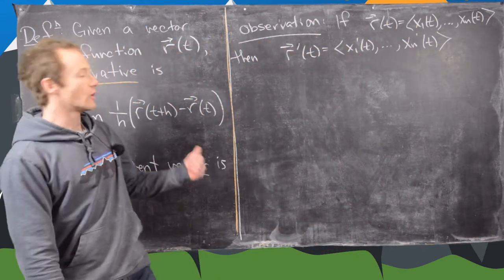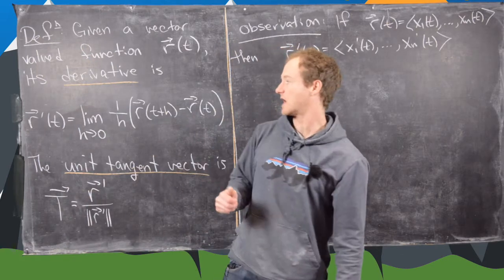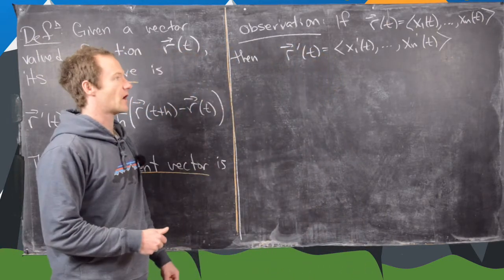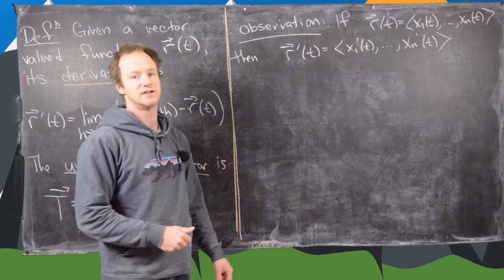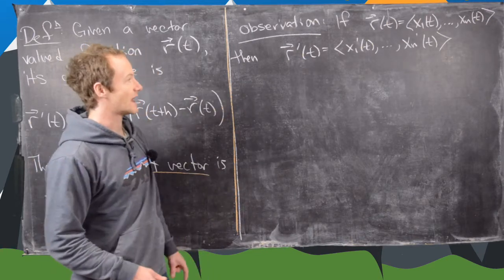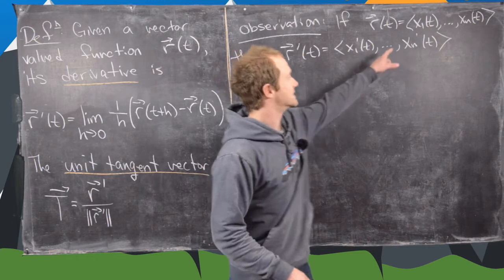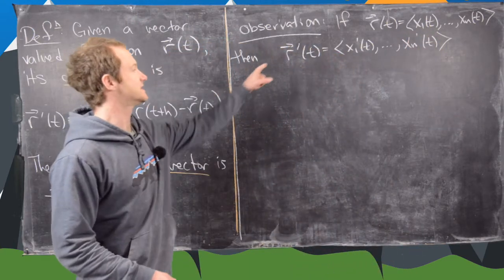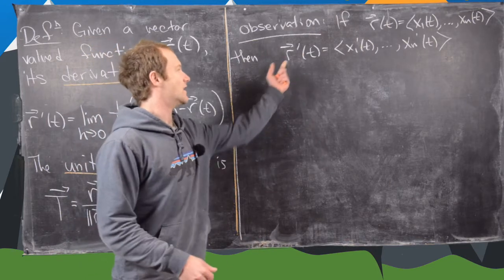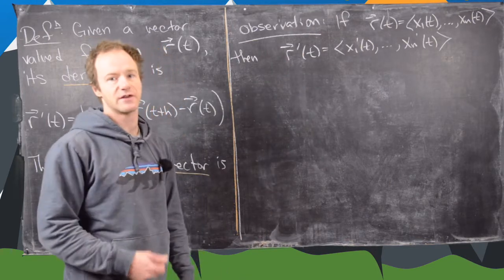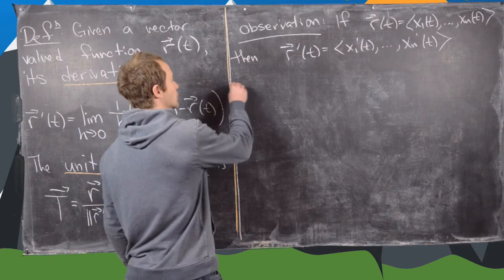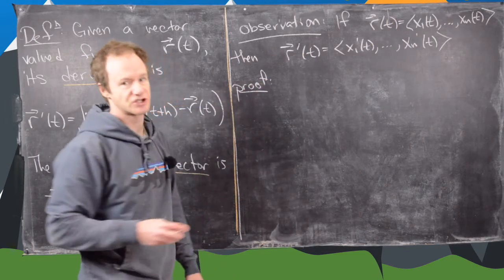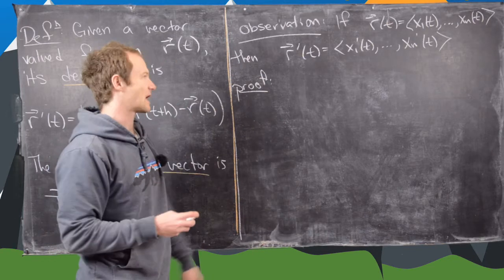We don't really want to do this limit every time we want to take a derivative of a vector-valued function. So we have the following observation which allows us to do it more quickly. If we have r as a vector-valued function with n entries, then the derivative of r is just what you get by taking the derivative of each entry. We'll do a quick proof of this using some results from Calculus 1.